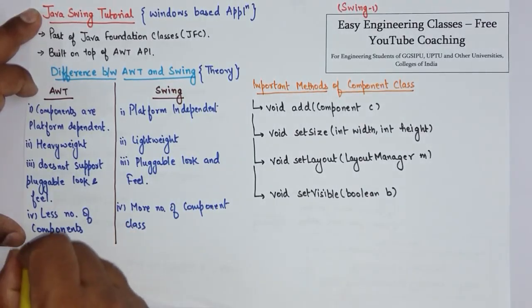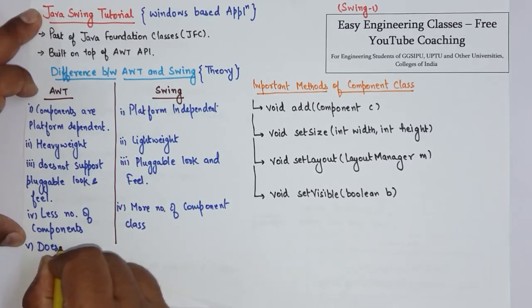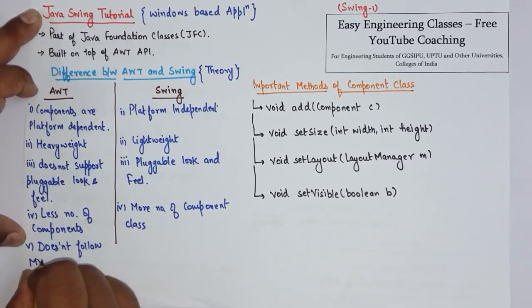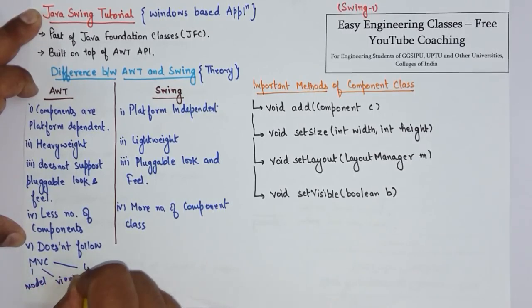Then the final difference is AWT does not follow MVC architecture. By MVC it means Model View and Controller.